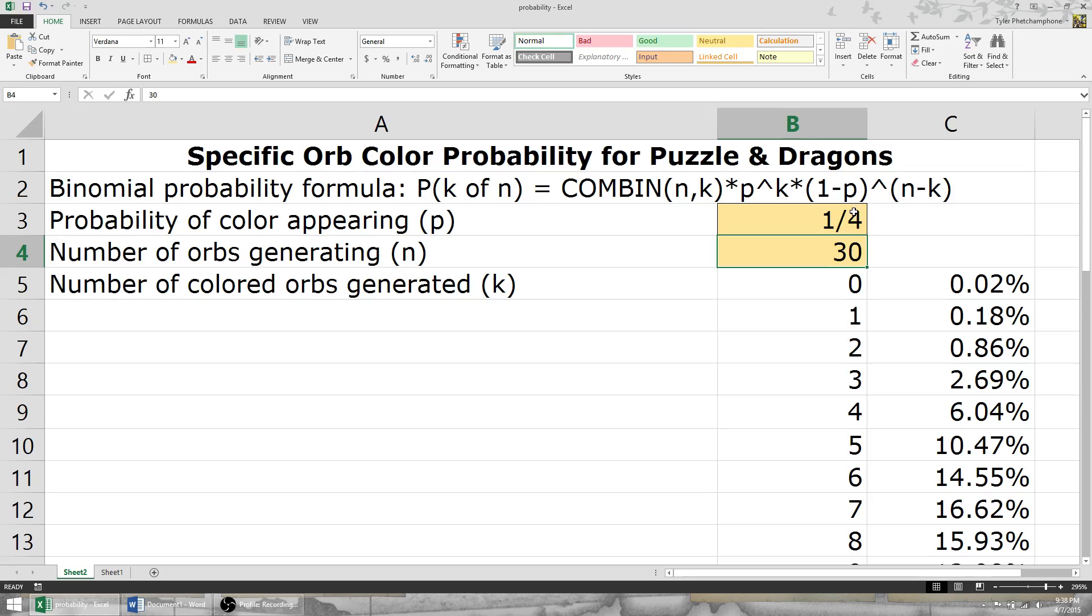That means there's only a one in four chance of generating, let's say, a red orb, because there's only red, blue, green, and pink orbs. So that's a one in four chance.